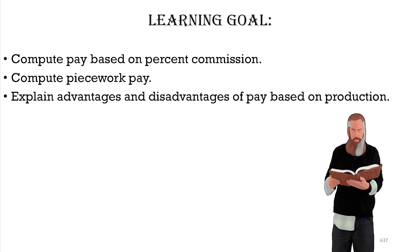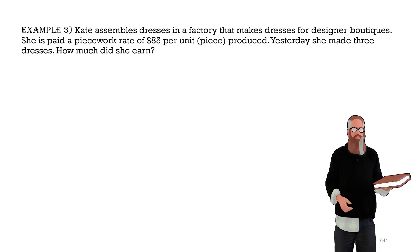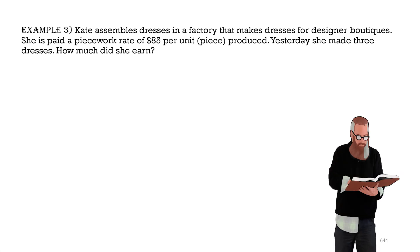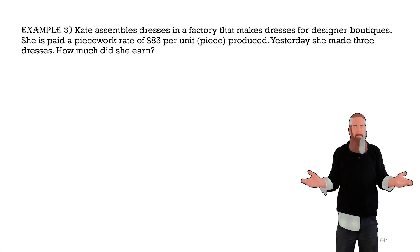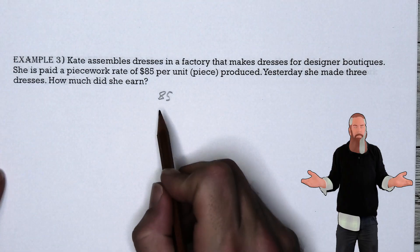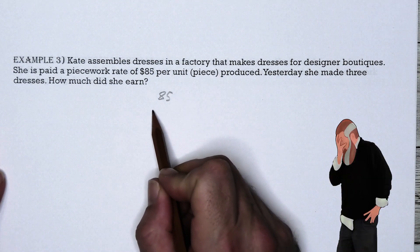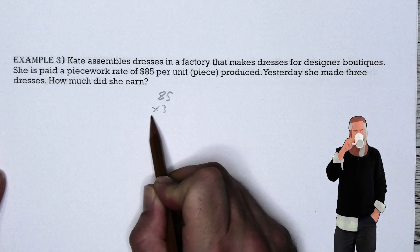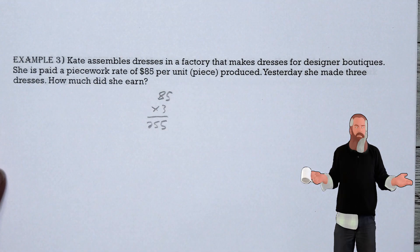Now let's compute some piecework pay. Kate assembles dresses in a factory for a designer boutique. She is paid a piecework rate of $85 per dress produced. Yesterday she made three dresses. This is straightforward: $85 per dress times three dresses equals $255 earned yesterday.